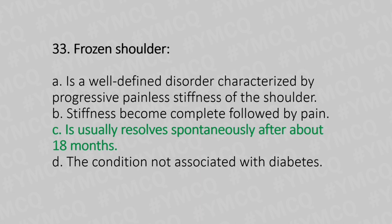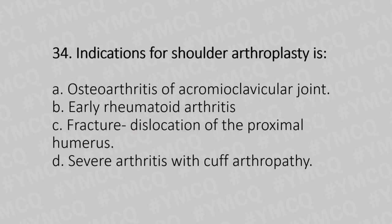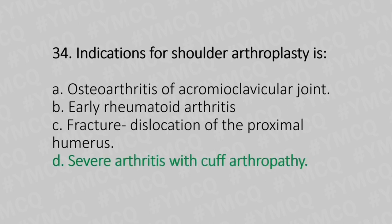Now let's move to question number 34. Indication of shoulder arthroplasty is. Option A: osteoarthritis of the acromioclavicular joint. Option B: early rheumatoid arthritis. Option C: fracture dislocation of the proximal humerus. Option D: severe arthritis with cuff arthropathy. And the answer is Option D, severe arthritis with cuff arthropathy.